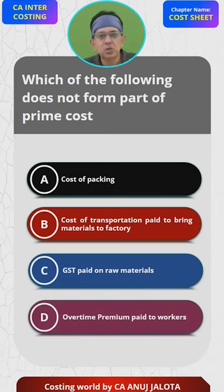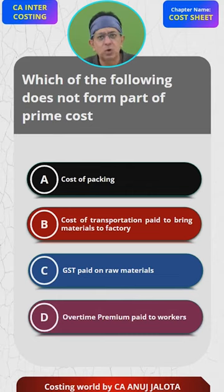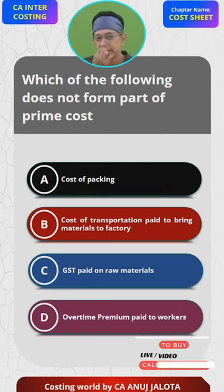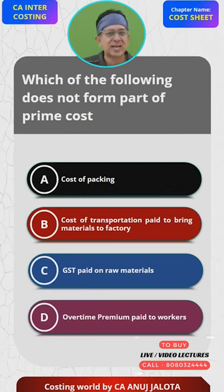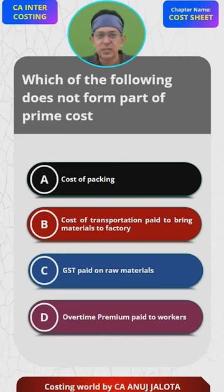Option B — cost of transportation paid to bring materials to the factory — I think this is part of your raw material cost only. Whenever you purchase raw materials, you incur carriage inwards. This is exactly that. So as per me, B cannot be the answer.